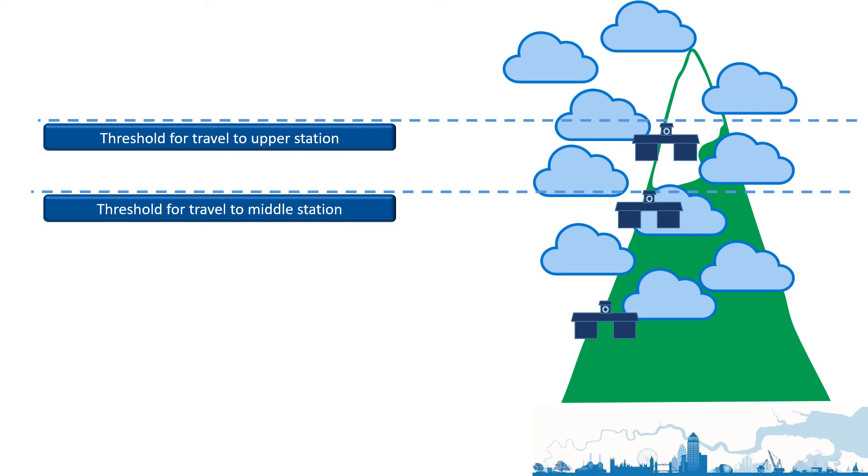Here, your destination will change if the cloud level is predicted to lift above the level indicated by the dotted lines.